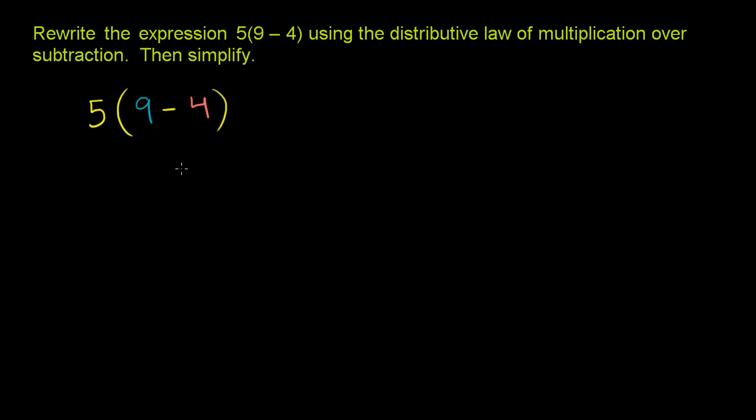Now, if we want to use the distributive property, you don't have to. You could just evaluate 9 minus 4 and then multiply that times 5. But if you want to use the distributive property, you distribute the 5. You multiply the 5 times the 9 and the 4.